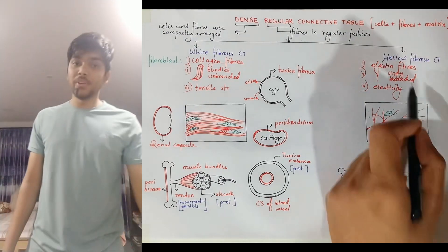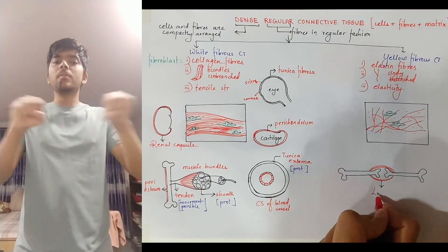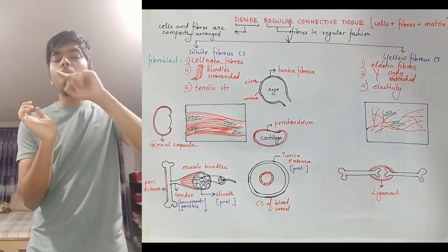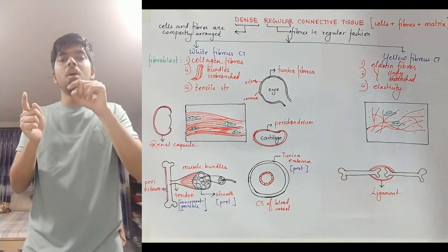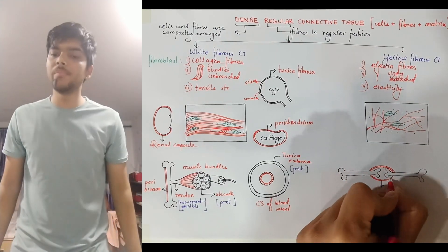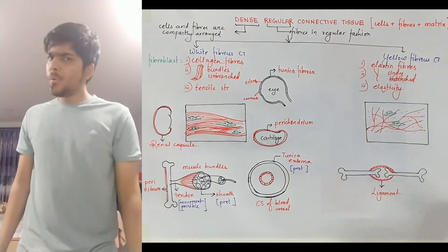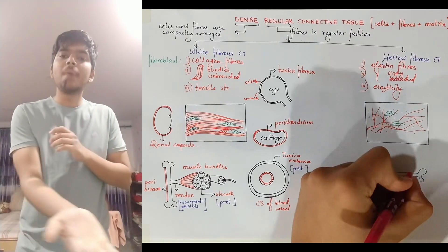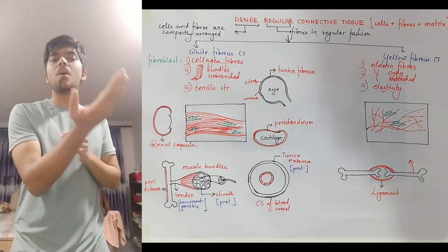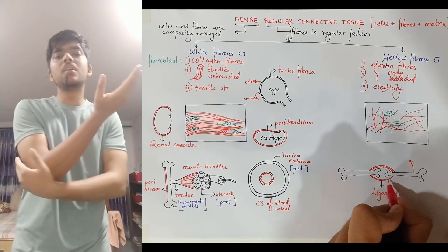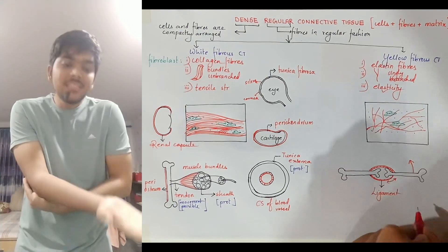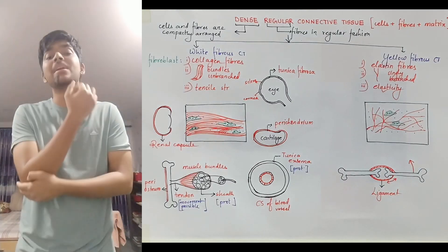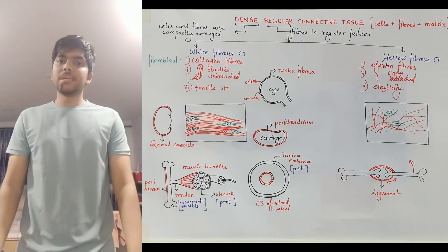Yellow fibrous connective tissue is found forming the ligaments. A long bone is connected to another long bone with the help of ligaments, and these ligaments are made up of elastin fibers, providing elasticity. Elasticity is necessary here because for one bone to rise up, the ligament connecting the end of that bone to another bone must be able to stretch, allowing the bone to rise. That's why elastin fiber is found in ligaments, making ligaments your yellow fibrous connective tissue.